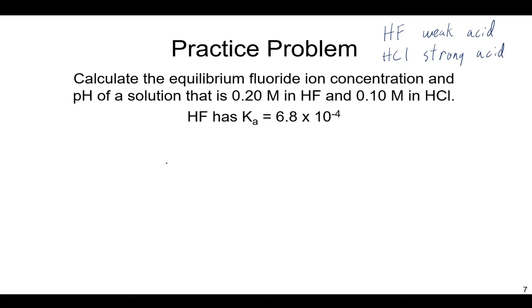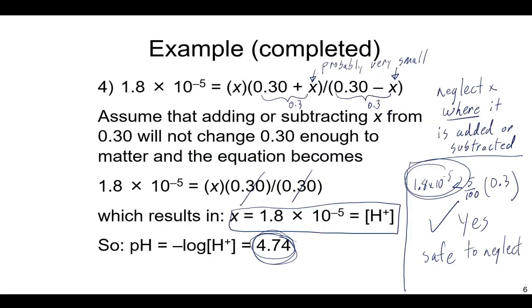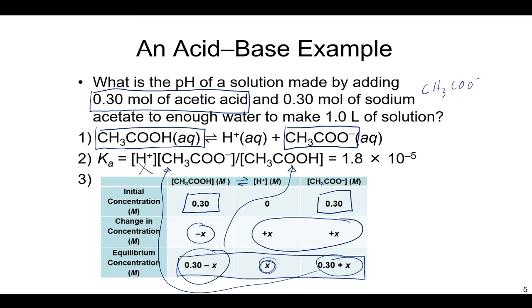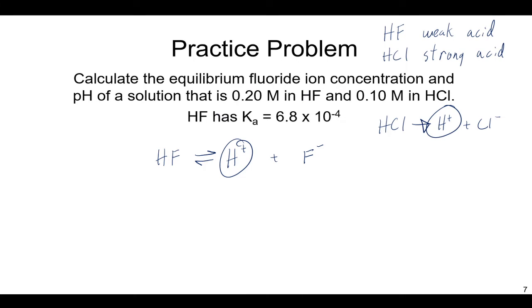Now, before we even begin, let's think about what is the common ion? What ion is in common between these two things when they're dissociating? Well, HF, we know as a weak acid, we'll have a double arrow and create H plus and F minus. HCl, we know, is a strong electrolyte and completely dissociates. But the ion they have in common here is the H plus. Before, in our example and in this practice problem, the common ion was the conjugate base. But it doesn't have to be as we see in this example. The common ion can be H plus. So let's set up our ICE chart and proceed.